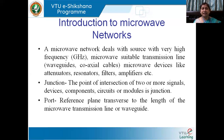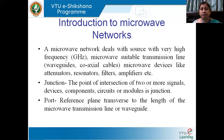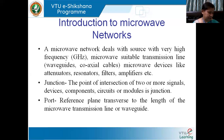The devices used in a microwave network include attenuators, resonators, filters, and amplifiers. There are two important terms in a microwave network: one is a junction. A junction is the point of intersection of two or more signals, devices, components, circuits, or modules.